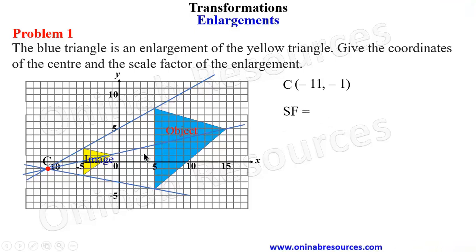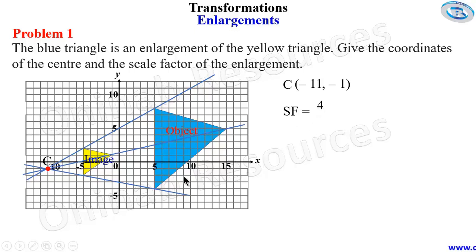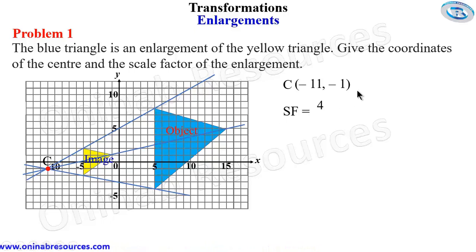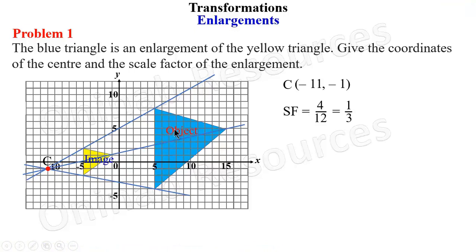For the scale factor, remember it is image length divided by object length. The side that accurately gives us both lengths: for the image we count 1, 2, 3, 4 — that is 4 units. For the object we count 1 through 12 — that is 12 units. So the scale factor is 4 over 12, which in simplest form is 1 over 3. This is Type A — the image is between the center and the object and is smaller than the object, so the scale factor is less than one. End of Problem 1.